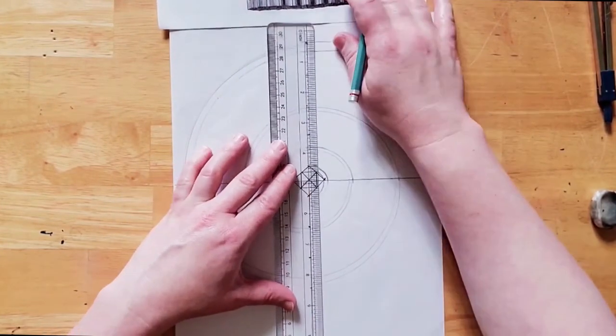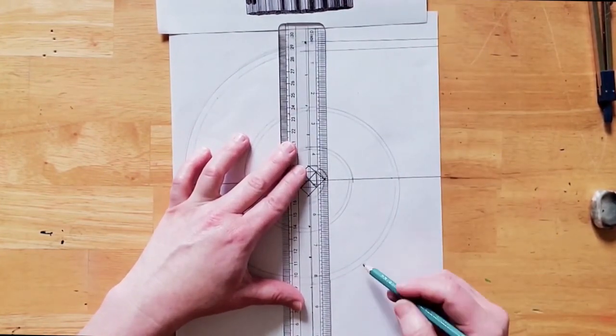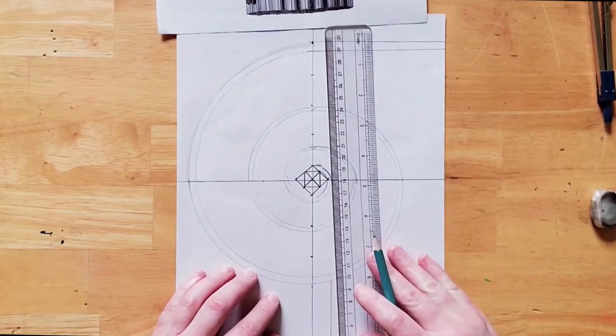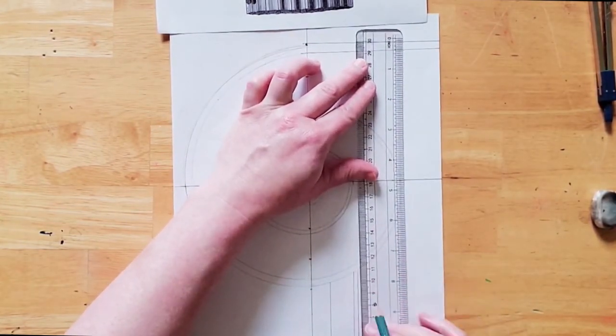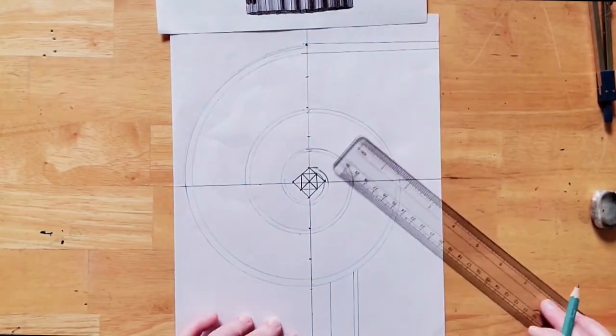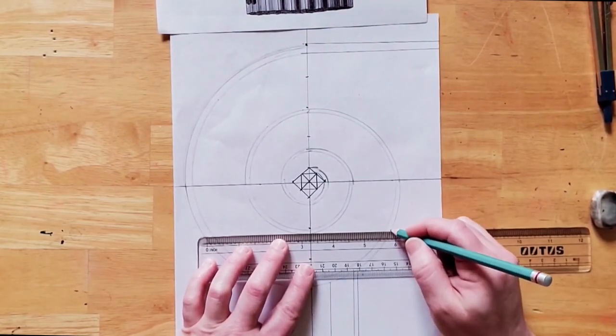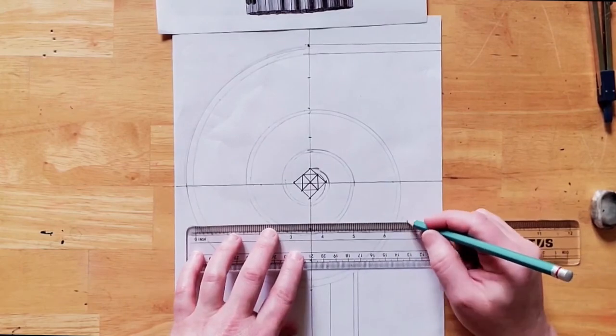Remember, practice makes perfect. If it didn't turn out exactly the way you wanted, remember that this is just your first time making a spiral. Give it another try. You can go over the lines with a marker to help them stand out and erase our central lines.